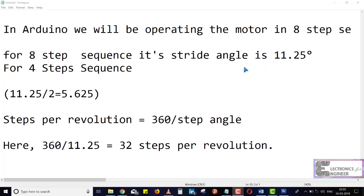For 4 steps sequence, it will take 5.625 stride angle. Just see here, it says steps per revolution. Means how many steps it will take for each revolution.